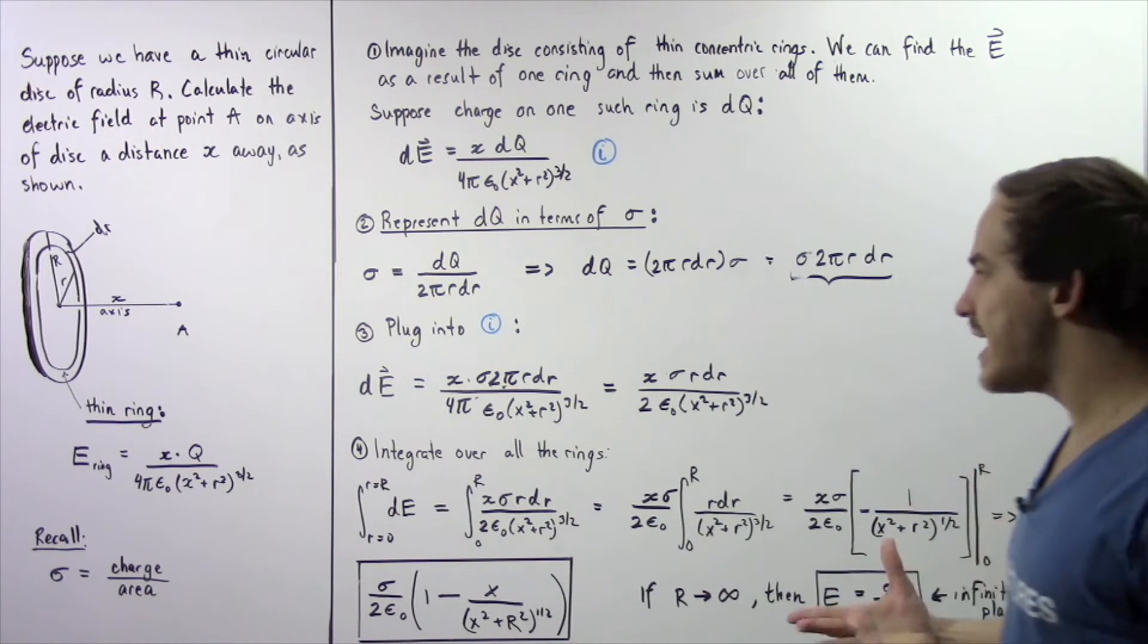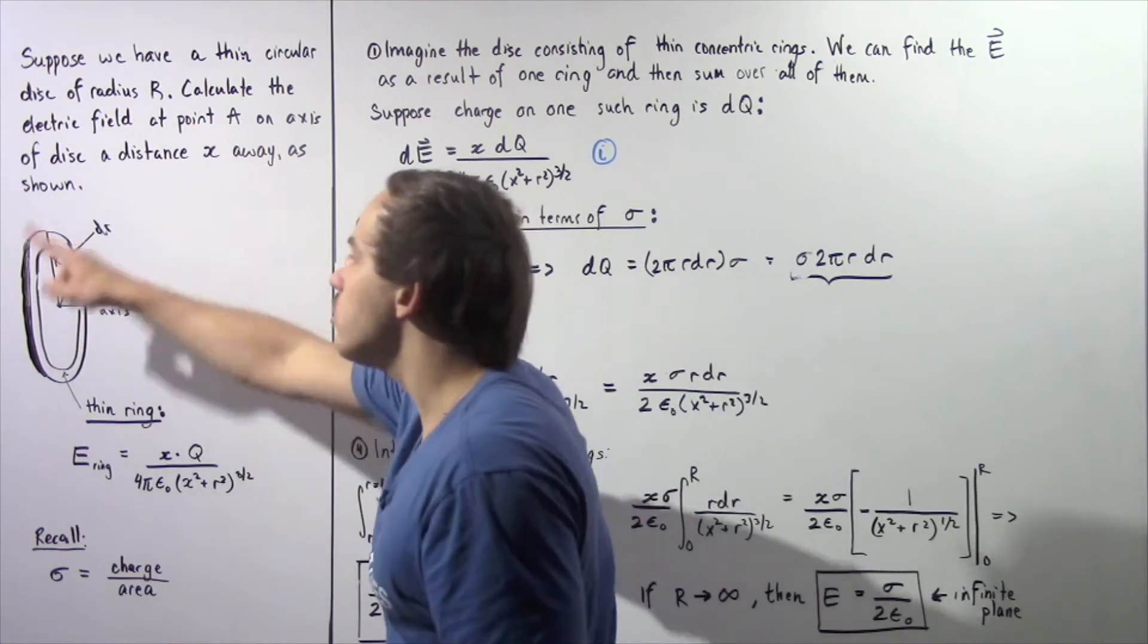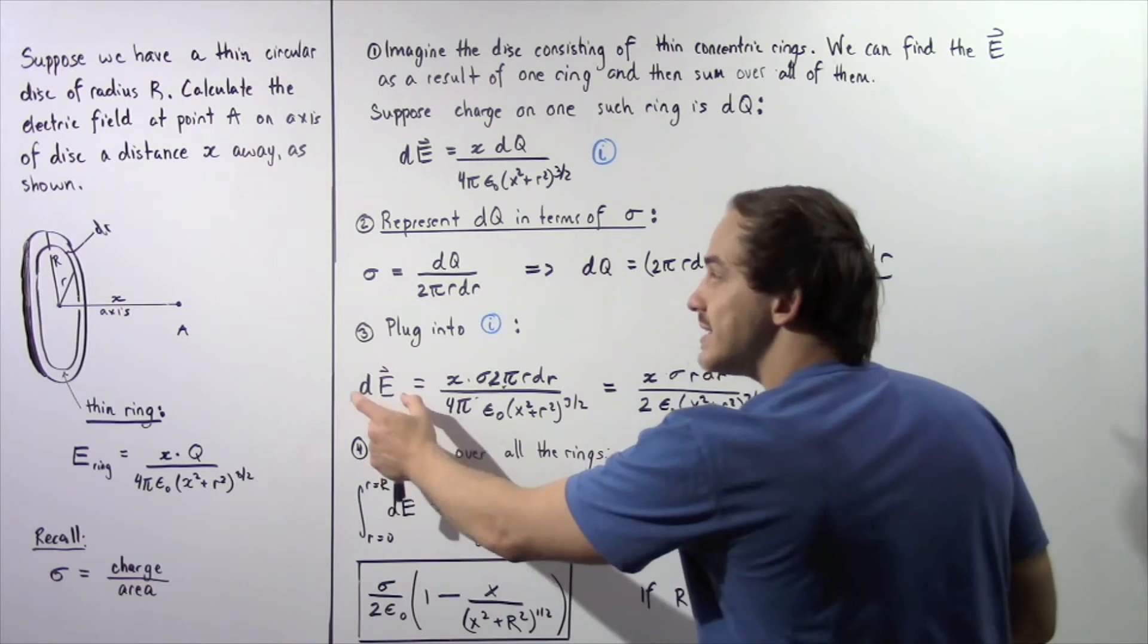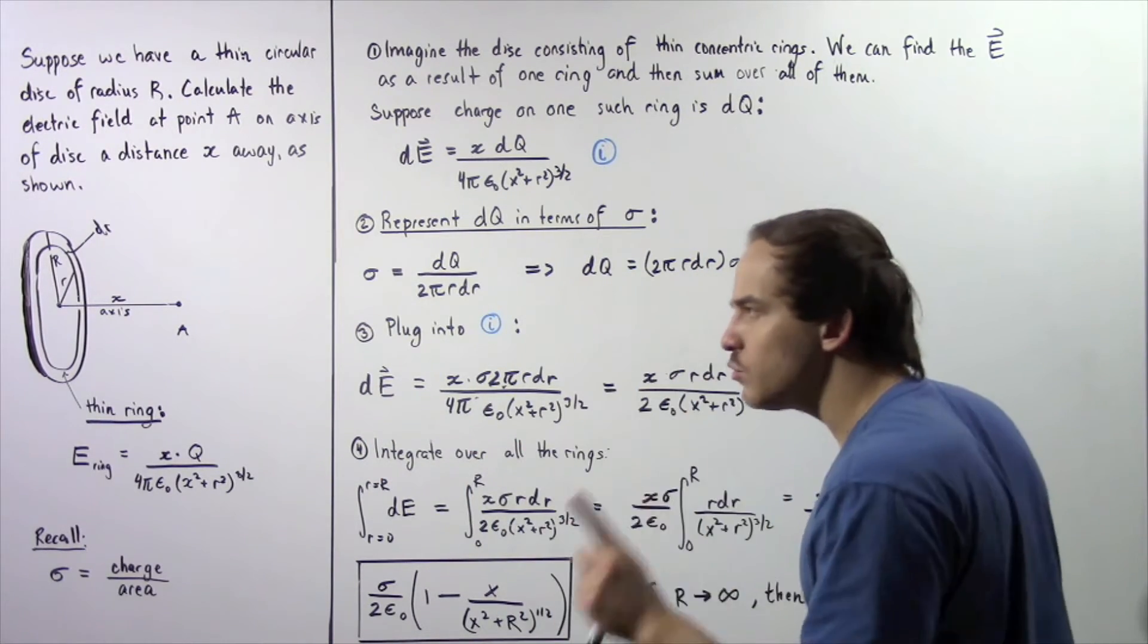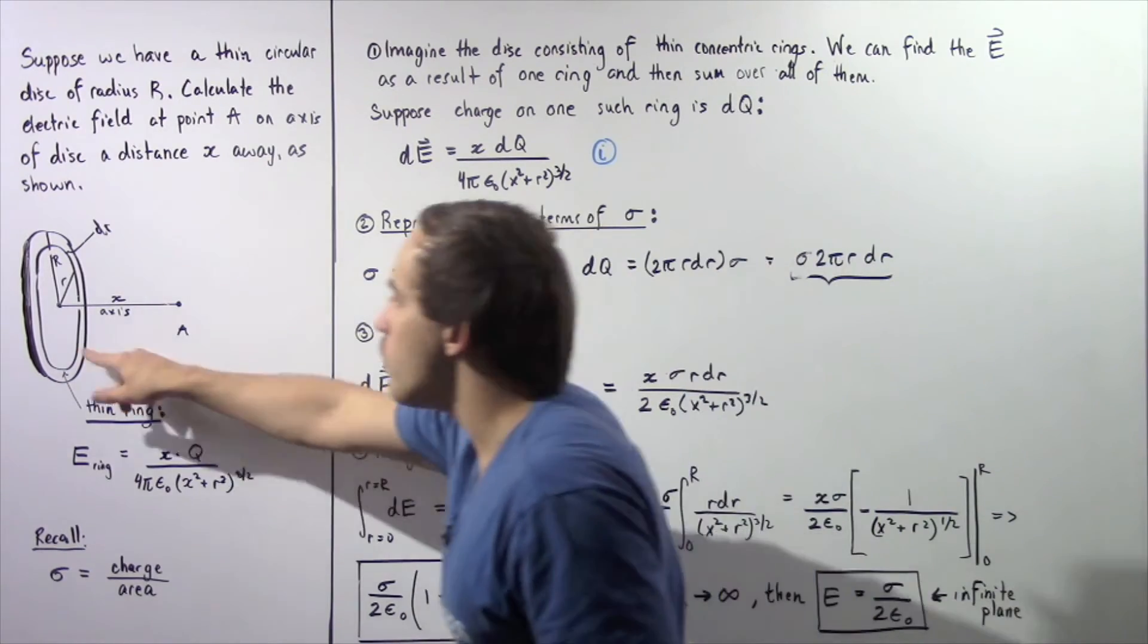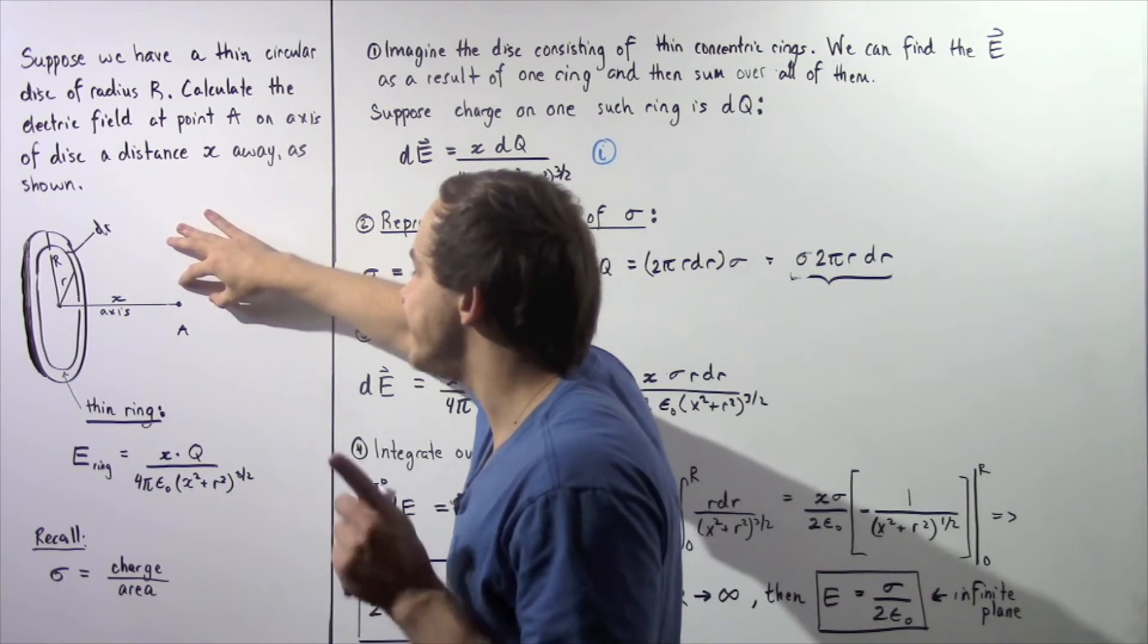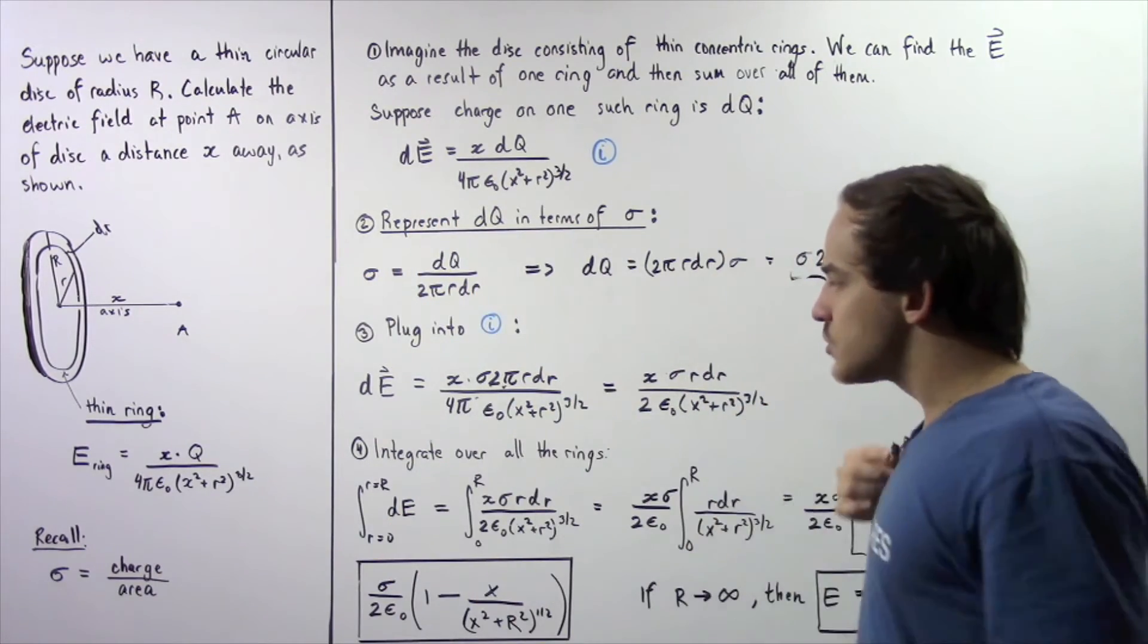So now we take one of these and we integrate over all of them because this is our electric field as a result of one ring found at point A. Now we want to integrate over all the rings and that will give us our final net electric field.